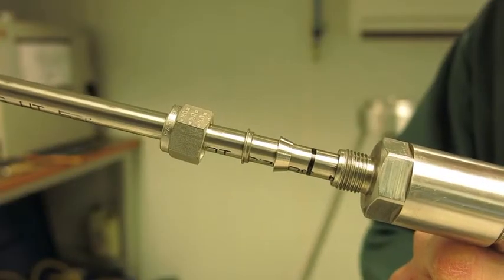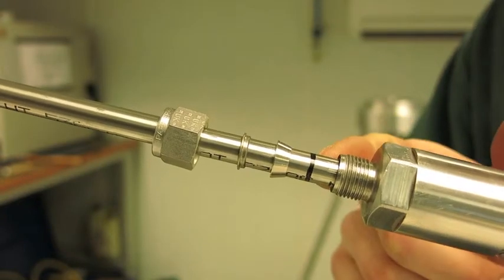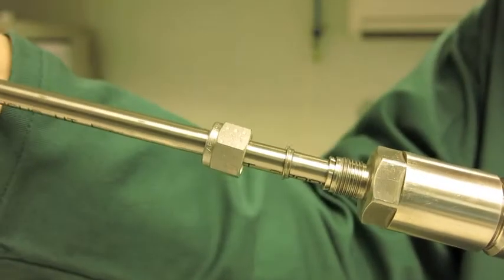When mating with the connector unit, ensure that the mark made on the 3/8 inch tubing sits flush with the end of the connector unit nut.